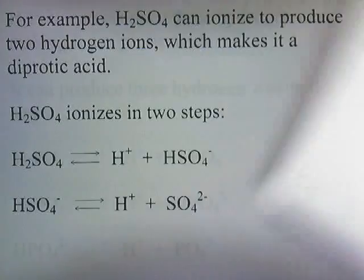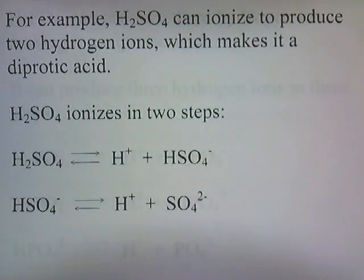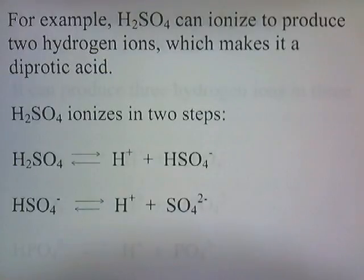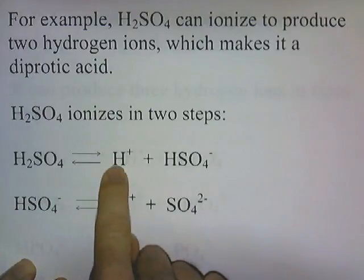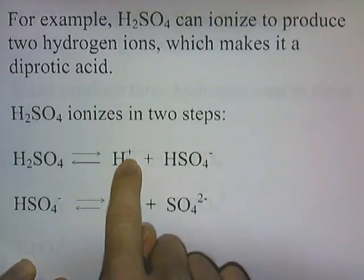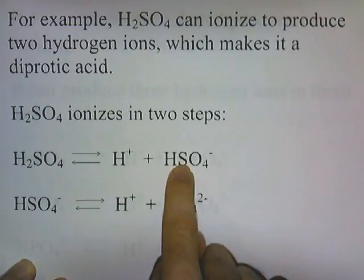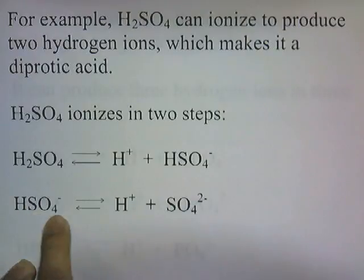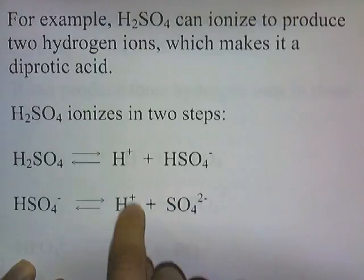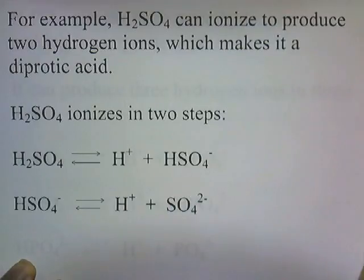For example, H2SO4 can ionize to produce two hydrogen ions, which makes it a diprotic acid. H2SO4 ionizes in two steps. First, one hydrogen falls off to form a single hydrogen ion and HSO4-. Then the HSO4- dissociates and forms H+ and SO4 2-. So two hydrogen ions are produced when you put H2SO4 into water, but they fall off one at a time.